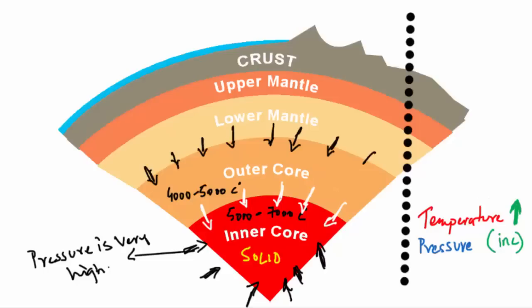The pressure in the outer core is not high enough to make it solid. And this is why the outer core is in liquid state while the inner core is in solid state, despite the fact that the inner core is hotter than the outer core.